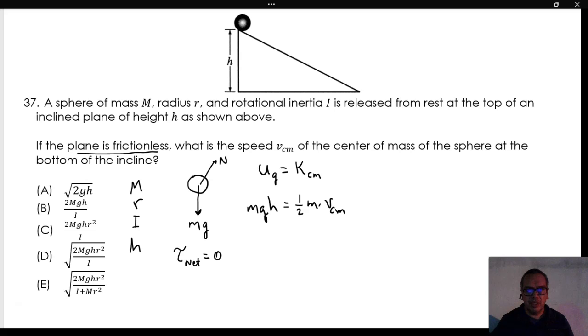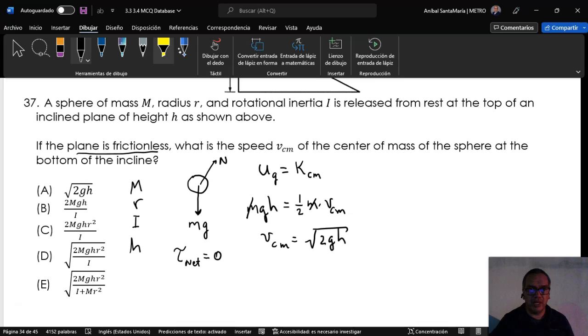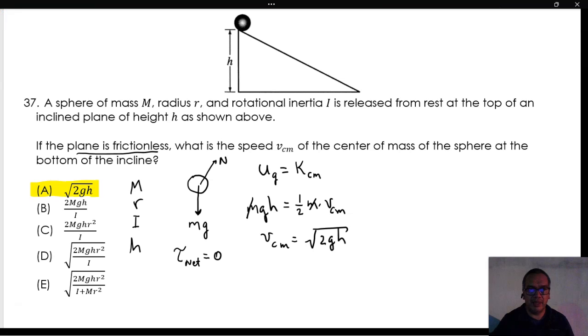Of course, this means that the velocity of the center of mass is going to be the square root of 2gh, and that means that the correct answer is option A.